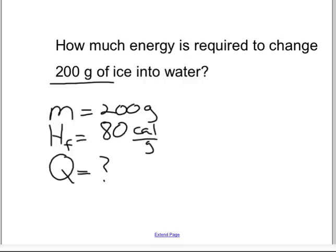Our next step, of course, is the mother equation. Q equals M times H sub F. And we have to ask, do we have to change the equation? Well, does this Q and this Q look the same? Yes, it does, so we don't have to change the equation.